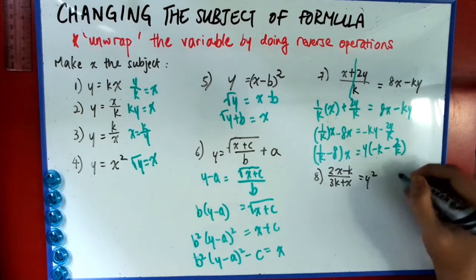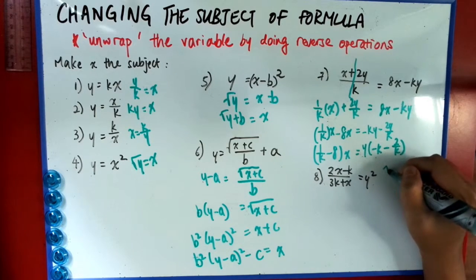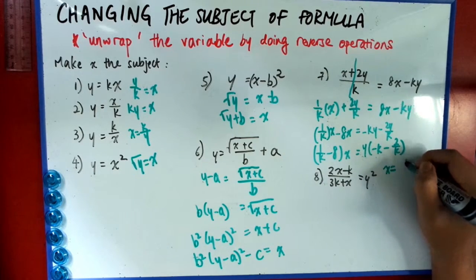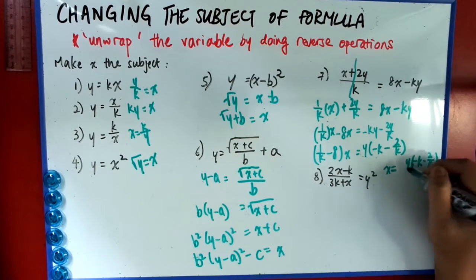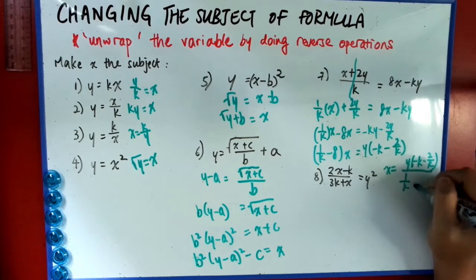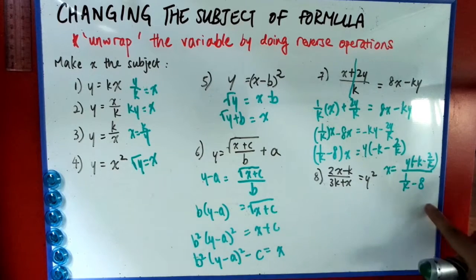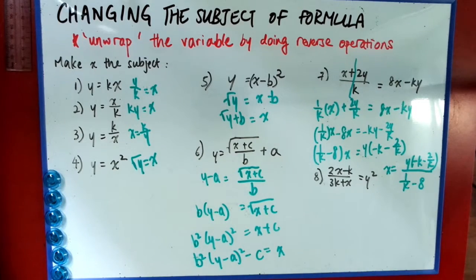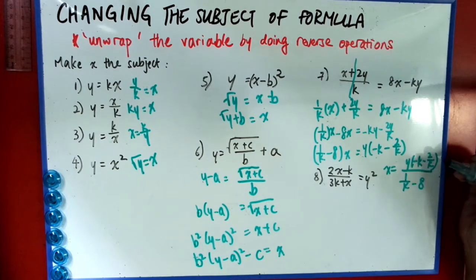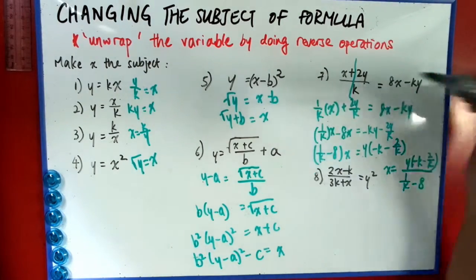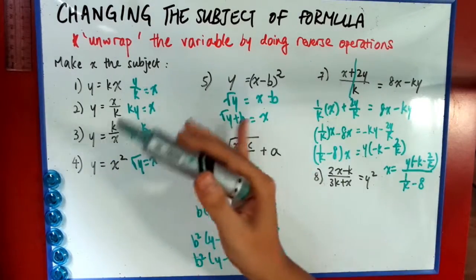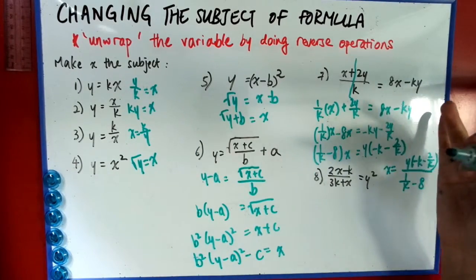Which I have no space. I'll just write here. So x should give you y minus k minus 2 over k, divide 1 over k minus 8. This is the final answer. Seems like it's very messy, but it is the answer because x appears in two places here and it's more complicated than this kind of questions. So we do question 8.